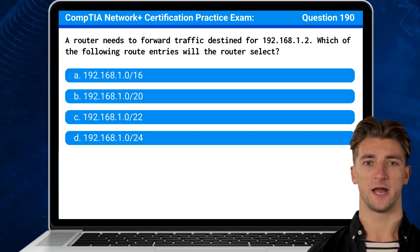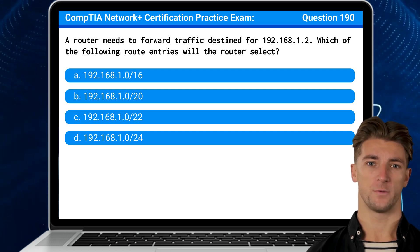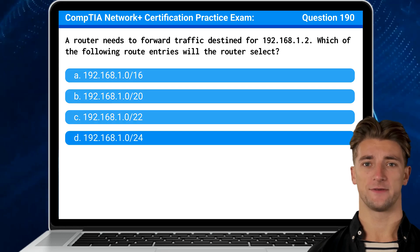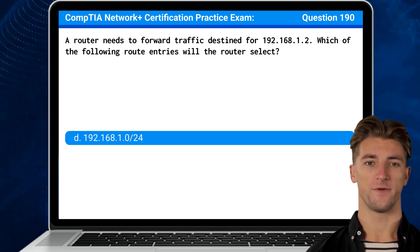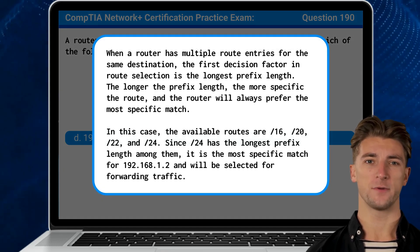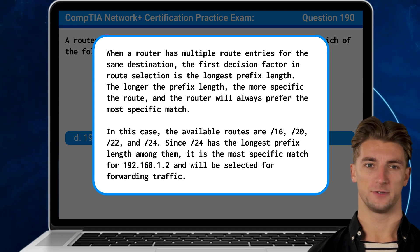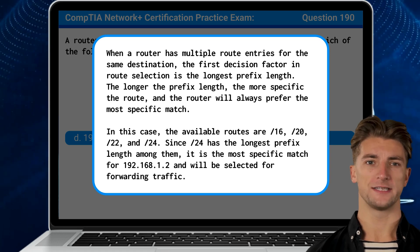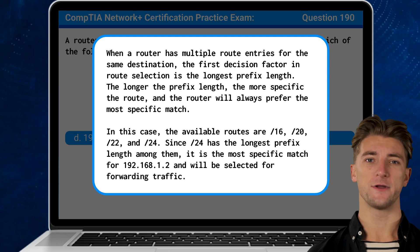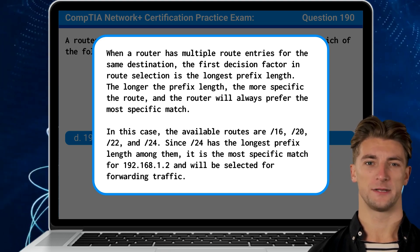Question 190: A router needs to forward traffic destined for 192.168.1.2. Which of the following route entries will the router select? The answer is D, 192.168.1.0/24. When a router has multiple route entries for the same destination, the first decision factor in route selection is the longest prefix length. The longer the prefix length, the more specific the route, and the router will always prefer the most specific match. In this case, the available routes are /16, /20, /22, and /24. Since /24 has the longest prefix length among them, it is the most specific match for 192.168.1.2 and will be selected for forwarding traffic.